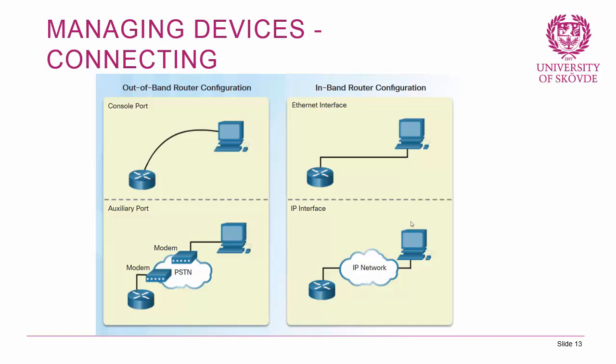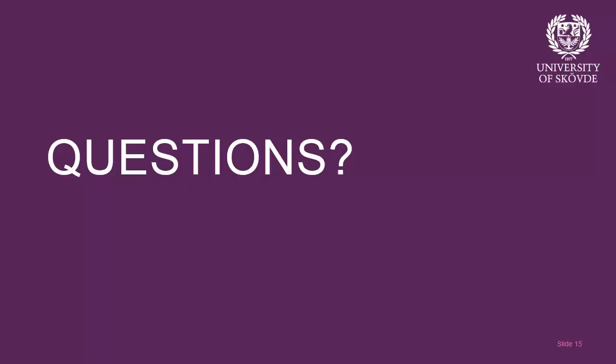You can also use a modem to connect through the auxiliary port — I've never done it, but it is a way to dial in to the device. In-band configuration means connecting to the router or an IP interface using SSH or Telnet. You should not use Telnet because it's insecure; use SSH to connect to a router reachable through an IP network. That's it for lesson one in CCNA3 version 6 — if there are any questions, feel free to leave them in the comments.